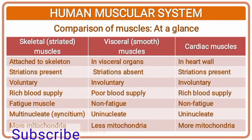Comparison of muscles at a glance — skeletal, visceral, and cardiac. Location: attached to skeleton / in visceral organs / in heart wall. Striations: present / absent / present. Action: voluntary / involuntary / involuntary. Blood supply: rich / poor / rich. Fatigue: fatigable / non-fatigable / non-fatigable. Nuclei: multinucleate / uninucleate / uninucleate. Mitochondria: more / less / more. That was all for today.